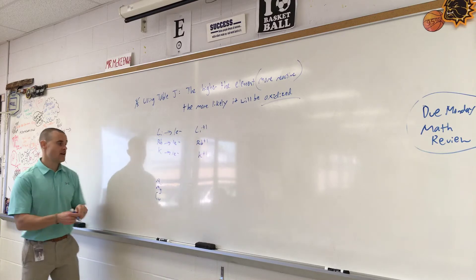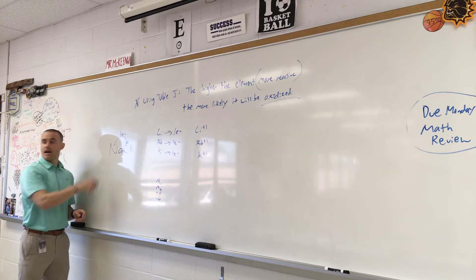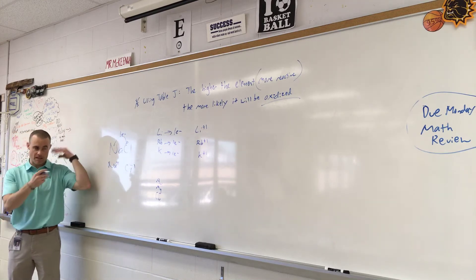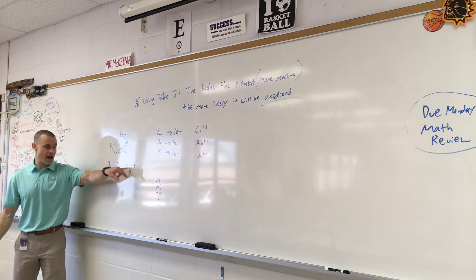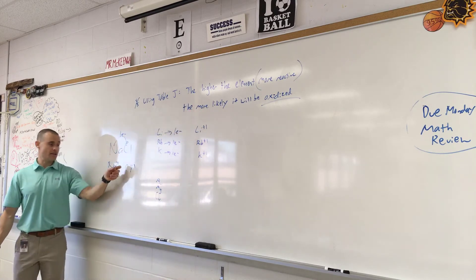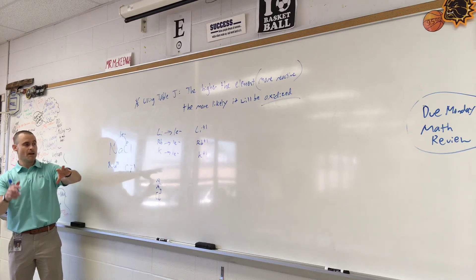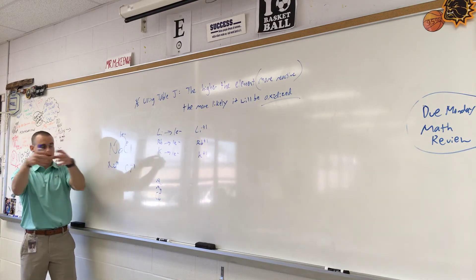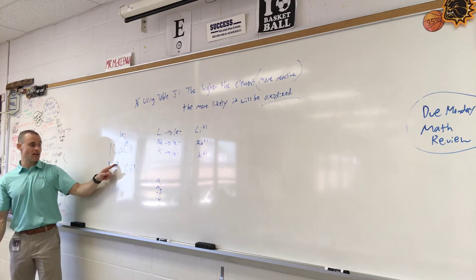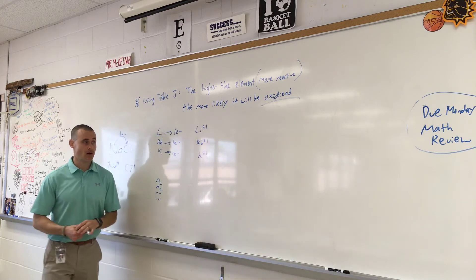If I want to make an ionic compound like NaCl, Na gives an electron to Cl. Na becomes plus one, Cl becomes minus one — this is old news. The reason this happens is actually because of electrochemistry. Na likes to be oxidized and Cl is going to be reduced. They work really well because they play pitch and catch with that electron. The more reactive an element is, the higher on Table J, the more likely it will get rid of its electron to become stable — which means it's oxidized.